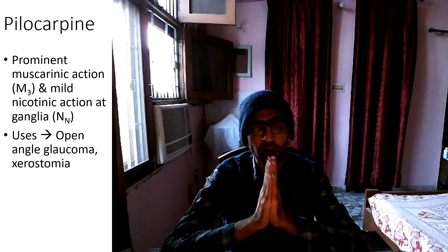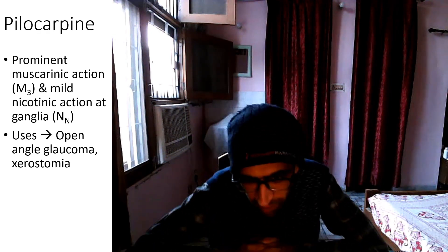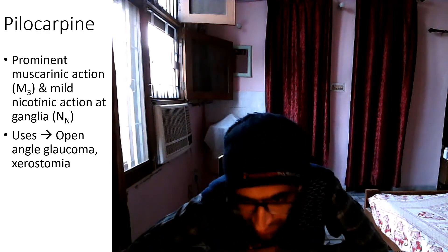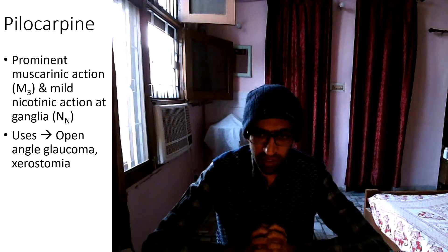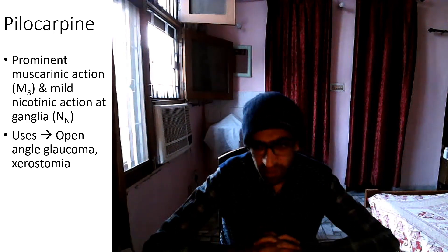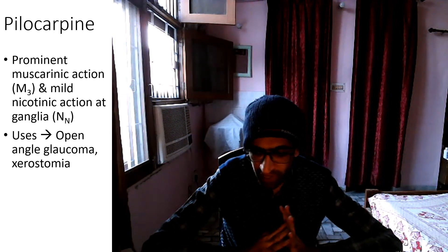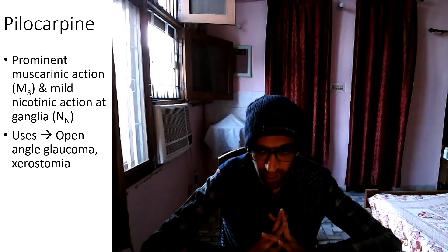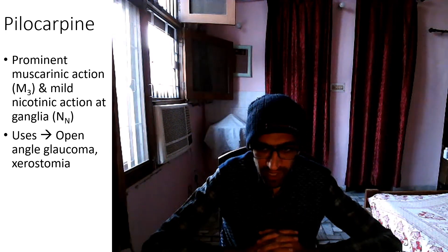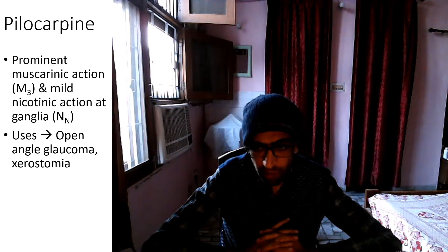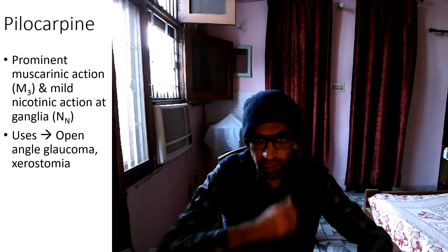Hi friends, welcome to another exciting episode of Autonomic Nervous System in which we will be covering the cholinergic system. We will talk about a directly acting agonist — a very commonly used drug, that is pilocarpine.